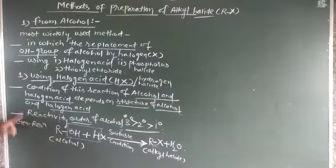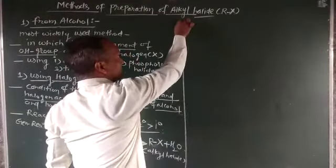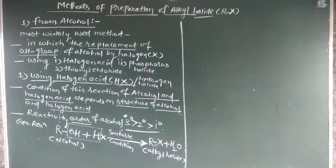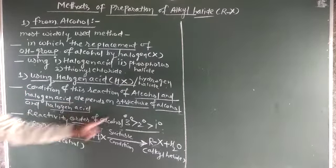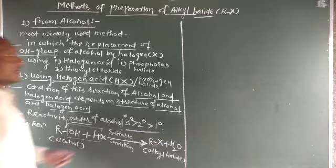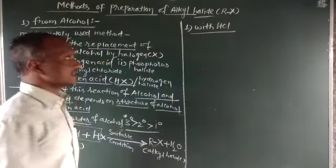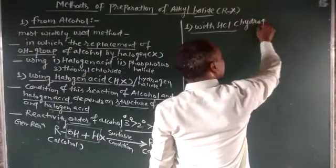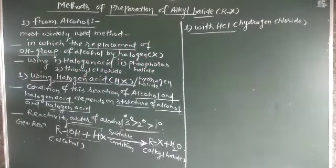Now we will take HX as HCl, that is hydrogen chloride or hydrochloric acid. The reaction using HCl takes place with anhydrous ZnCl2 as a catalyst.